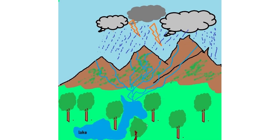Sometimes rivers are dammed by human interventions and can get land-trapped to form lakes as well. So lakes are land-trapped water bodies, whereas rivers are free-flowing water bodies. Lakes can also be formed by natural phenomena like earthquakes — an earthquake can have shattering effects on the landmass and trap river water, forming lakes. By the way, did you know how an oxbow lake is formed?